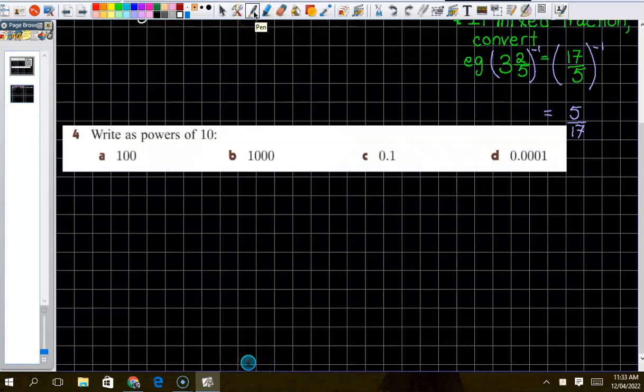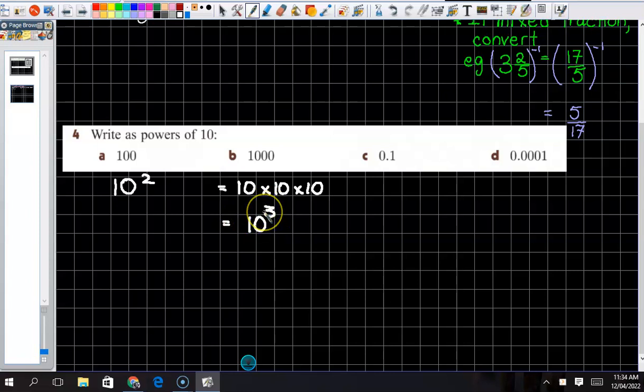So I think we all know 100 is 10 times 10, so we're happy that would be 10 squared. 1000, well we know that's 10 times 10 times 10, so that means this is 10 to the 3. Why is 0.1 to the power of negative one though? Think back to primary days. Isn't this your tenths column? So would you agree that is actually one over 10?